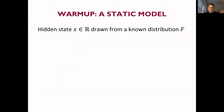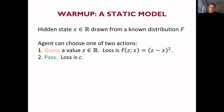Let me get a little bit more into details. I'm going to warm up with a static model that doesn't have any dynamic aspects, and then we'll add the dynamic part in after. In this static model, there's a hidden state of the world — again, one-dimensional, just a real number — drawn from some known prior distribution F. As an agent, the decision maker can choose one of two actions: they can either guess the state of the world, in which case they suffer a loss that grows quadratically with the distance from the true state, or they can pass and take a default option, which gives a default loss of C.